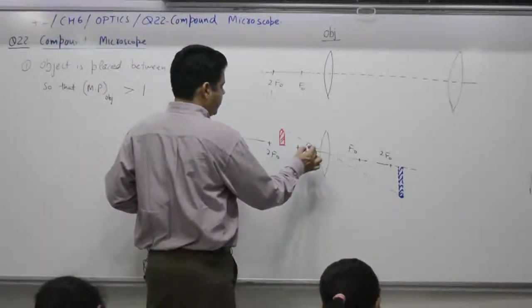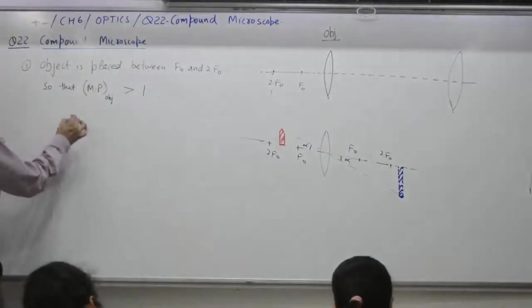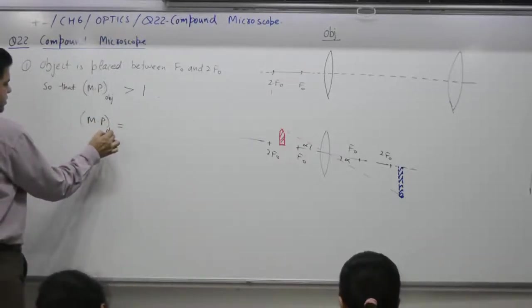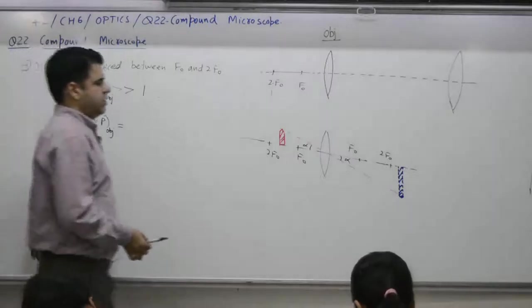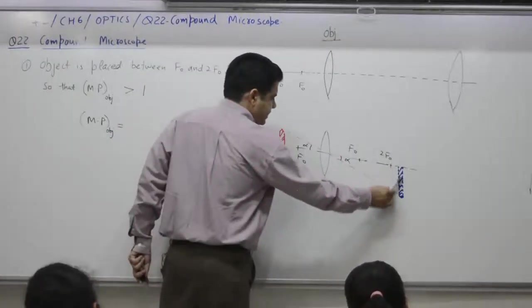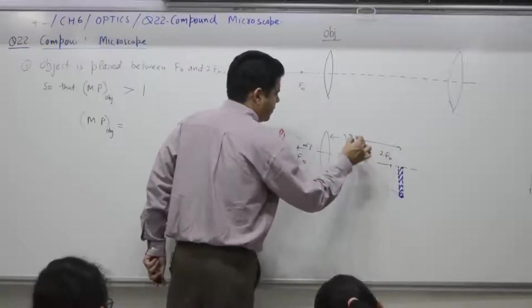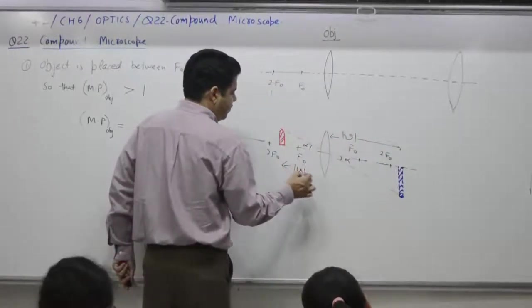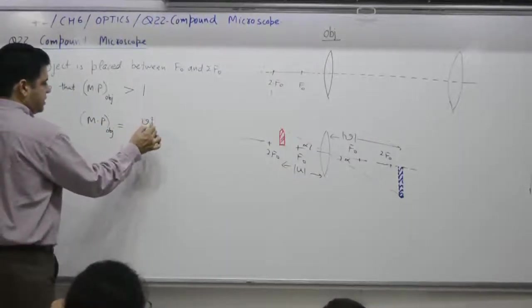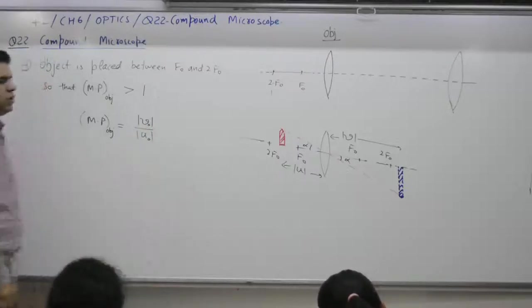Suppose its angle is alpha, then magnifying power for this case, we have already covered. This word comes out to be what? Magnifying power, this is H, this is H dash, this is H dash by, this distance is equal to what? From this point to this point, V, magnitude of V. This distance is how much? Magnitude of U. Magnifying power for the first case is magnitude of V by magnitude of U. It is objective. You can write it as V0 by U0.